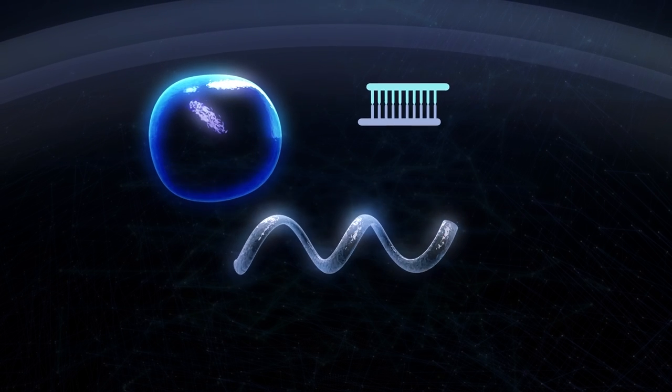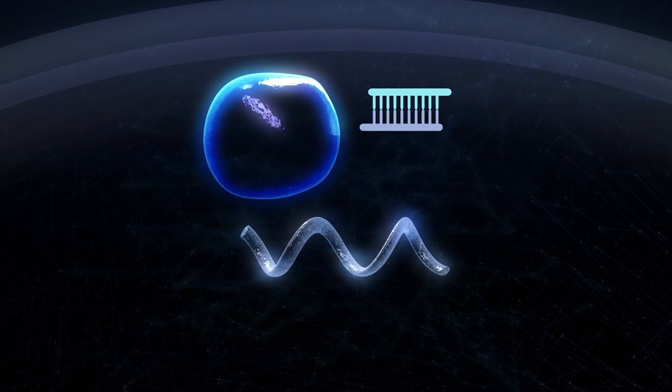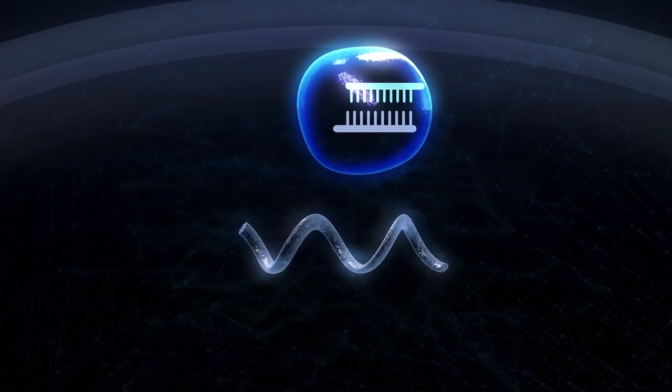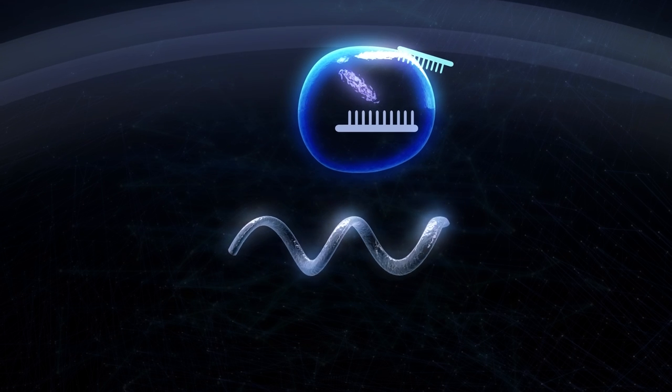An enzymatic complex, or RISC, then finds the siRNA and separates it into single strands. One of the strands, the guide strand, remains with the complex.